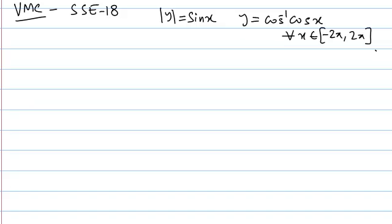This is question number 18, a subjective solved example. There are two relationships given: one is mod of y equals sin x, and another is y equal to cos inverse cos x. We have to find the number of solutions — that is, the number of points of intersection of the two. So we'll draw the graph of both and see the points of intersection.